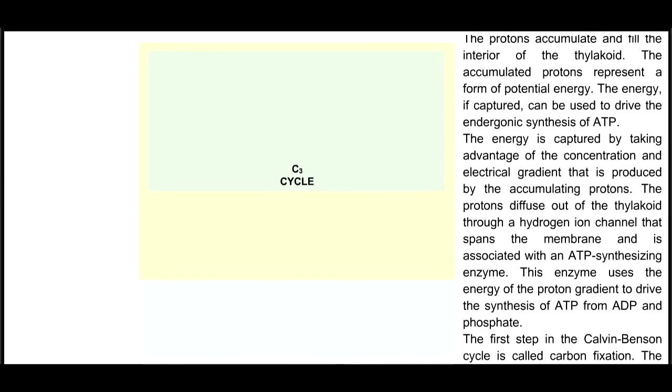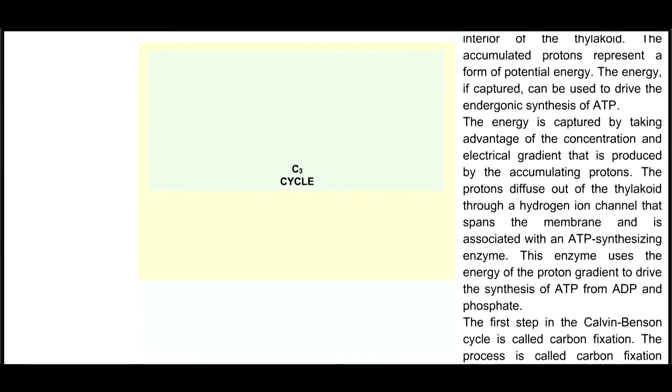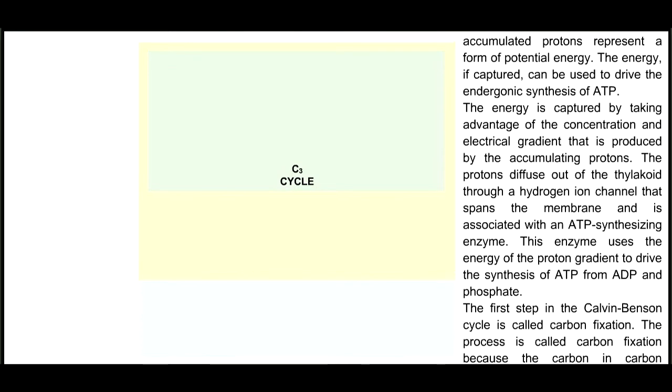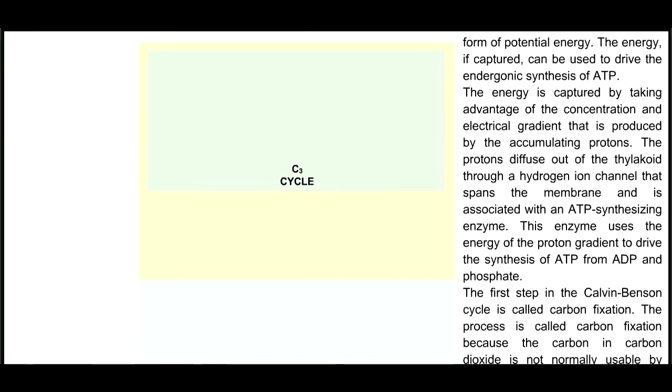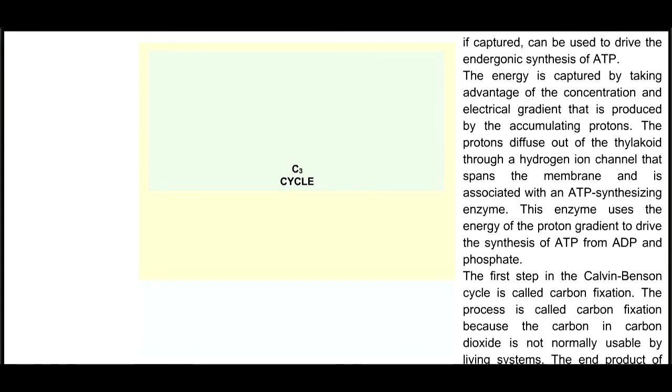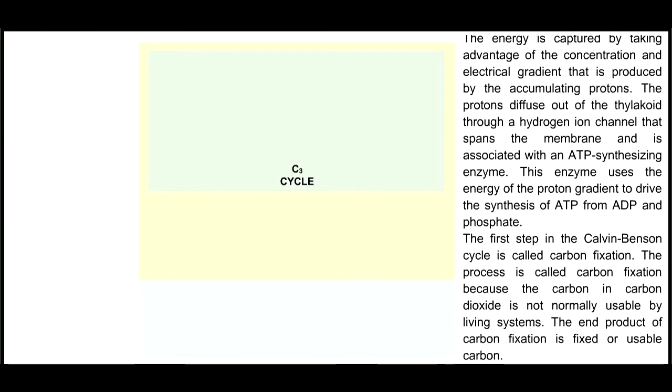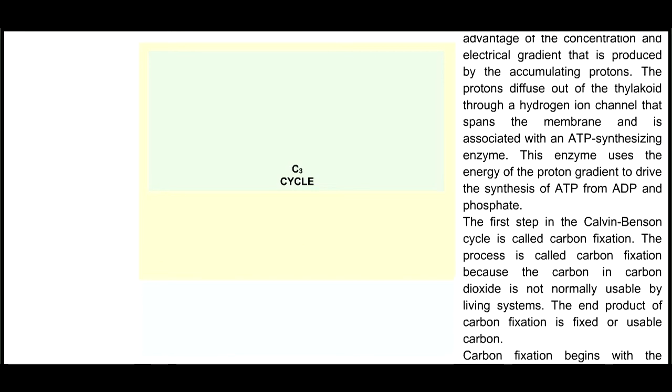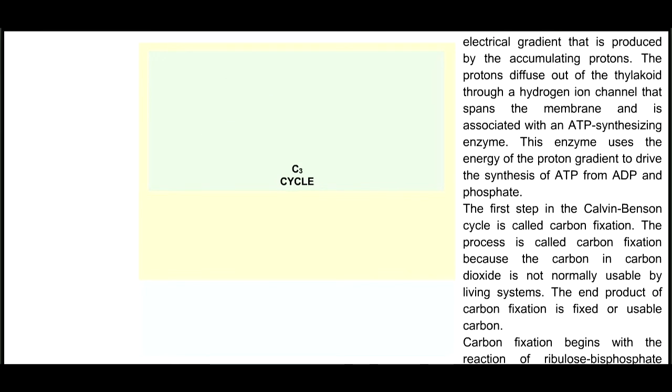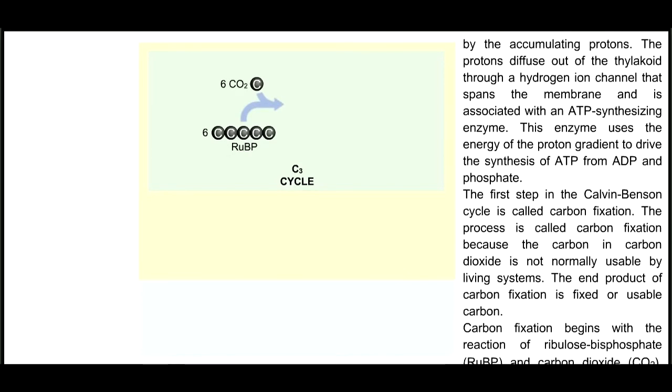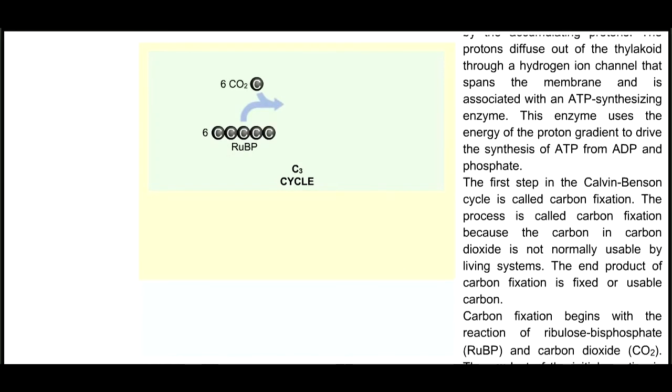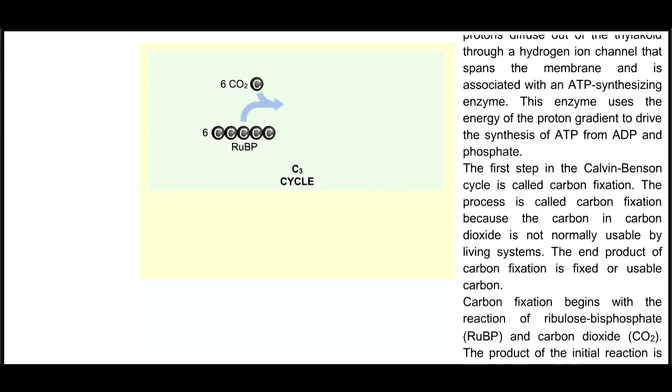The first step in the Calvin-Benson cycle is called carbon fixation. The process is called carbon fixation because the carbon in carbon dioxide is not normally usable by living systems. The end product of carbon fixation is fixed or usable carbon. Carbon fixation begins with the reaction of ribulose bisphosphate, RuBP, and carbon dioxide, CO2.